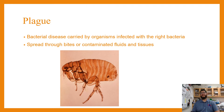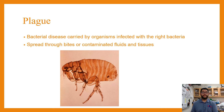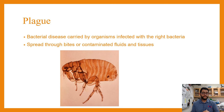We begin with plague — that's not an old disease anymore, it's still around. It's a bacterial disease carried by organisms infected with the bacteria Yersinia pestis. A flea would have Yersinia pestis in its gut, and when it bites us, it spreads through that contaminated fluid. So that is one way the disease can still be spread.